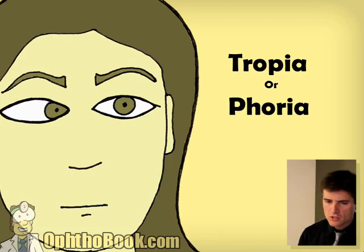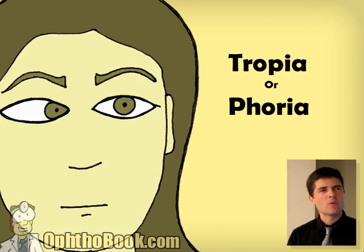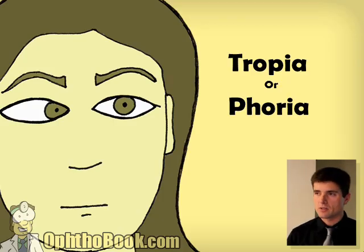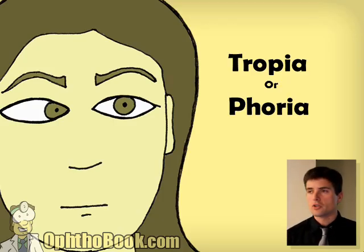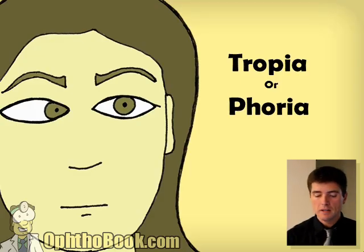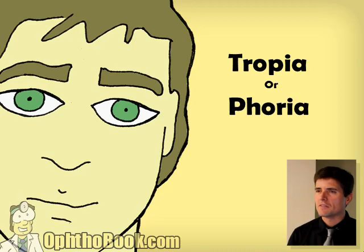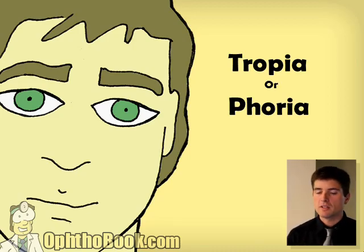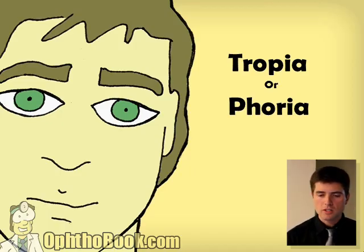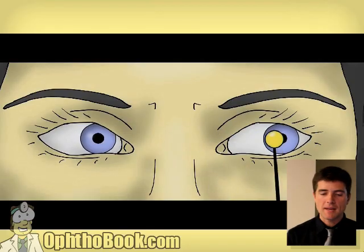For example, if one patient comes in and says they woke up with double vision, and you look and the right eye is turned in towards the nose — that's a large tropia, it's always there and very obvious. Compare this to another patient who says they get tired in the evening and start seeing double while watching television, but their eye looks normal. This could be a tropia or a phoria, so let's explain the difference by looking at some cases.